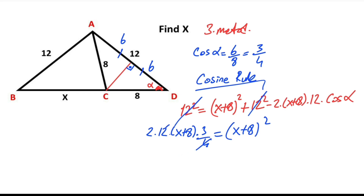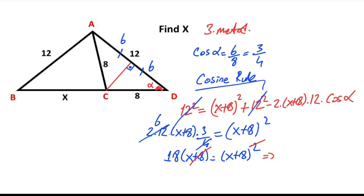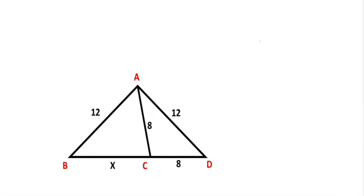We know that cosine alpha equals 3 over 4. Simplifying the expression: 18 times (x plus 8) equals (x plus 8) squared. Dividing both sides by (x plus 8): x plus 8 equals 18, so x equals 10 units.